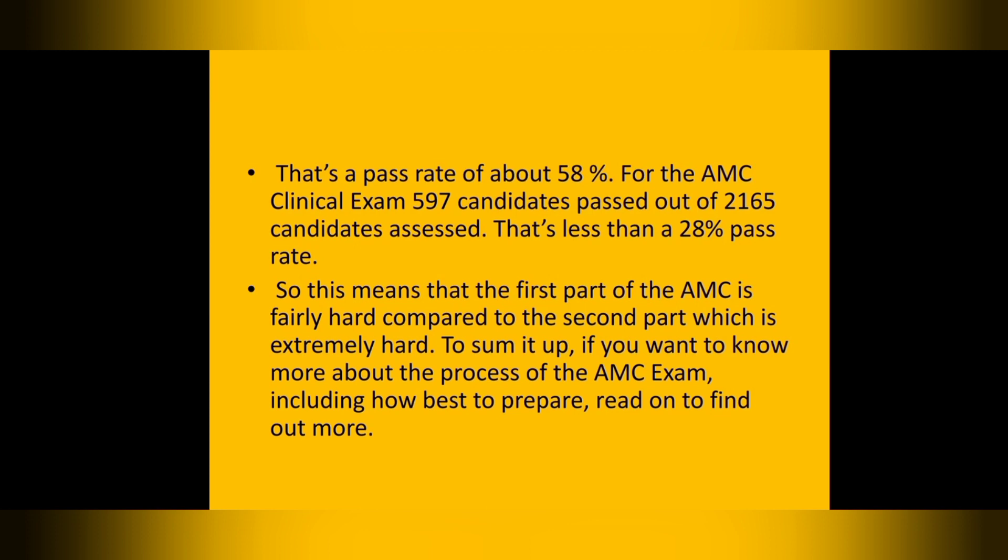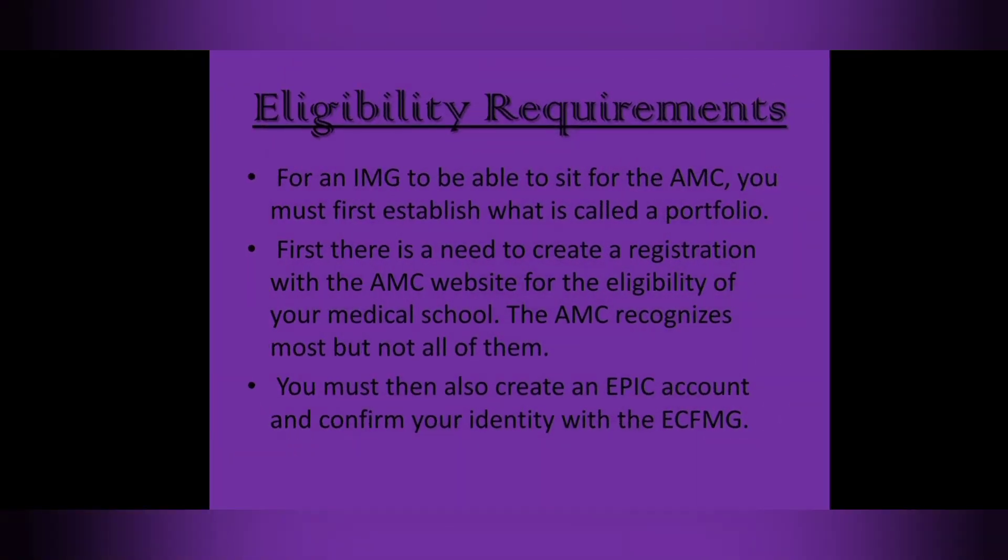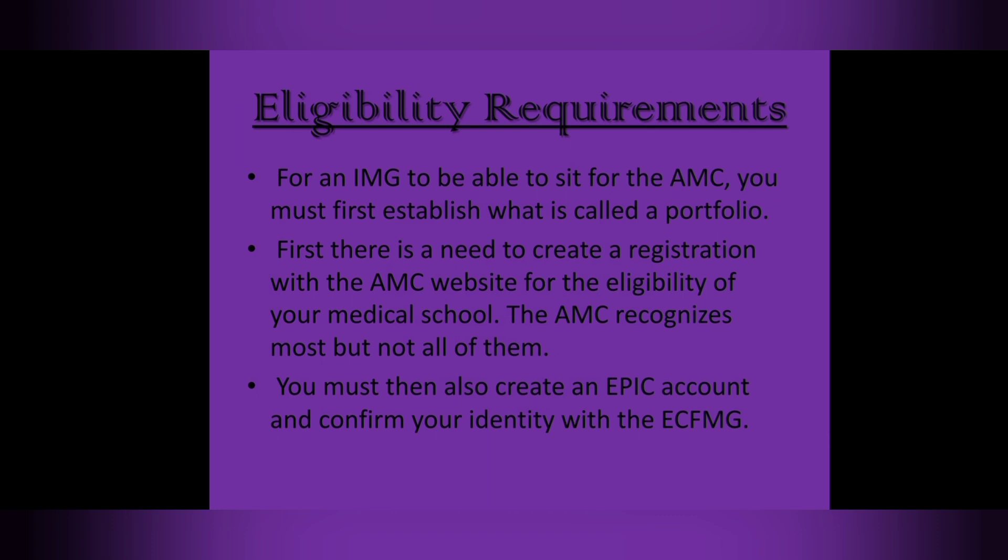This means Part One of the AMC is fairly hard, while Part Two is extremely hard. For eligibility, an IMG must first establish a portfolio. You need to create a registration with the AMC website to confirm your medical school's eligibility, as the AMC recognizes most but not all schools. You must also create an EPIC account and confirm your identity and eligibility with ECFMG. You also need your basic medical qualification — an MBBS degree — to apply.